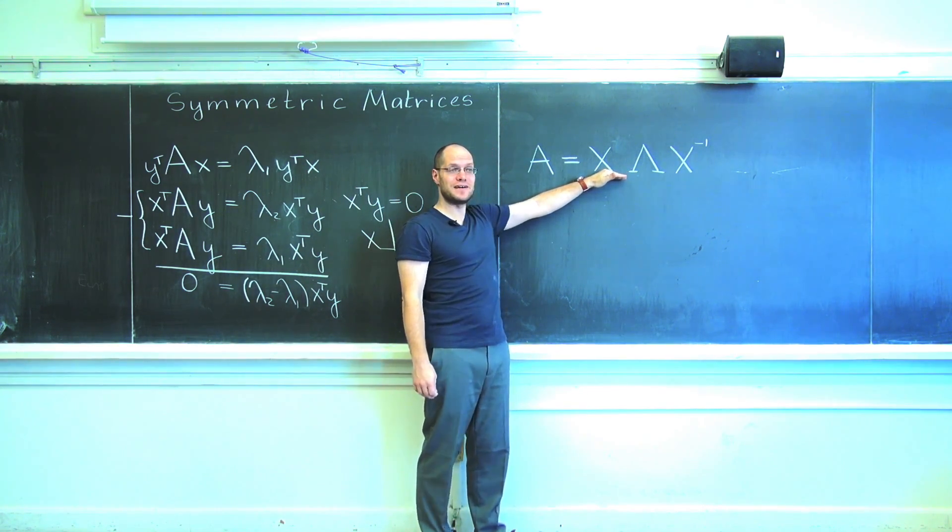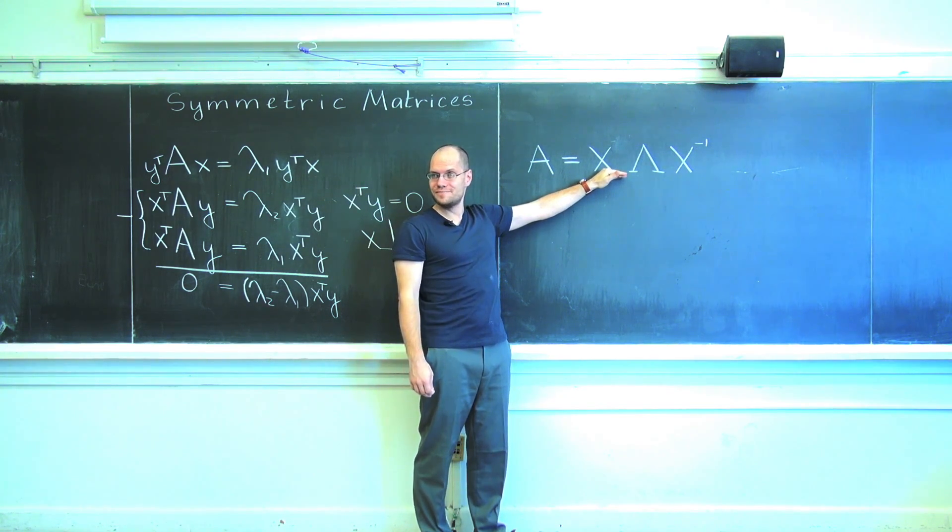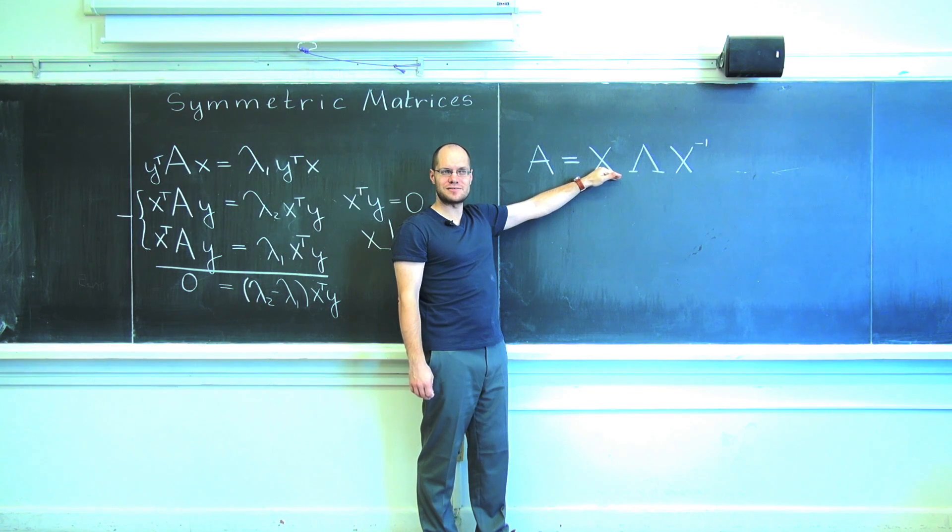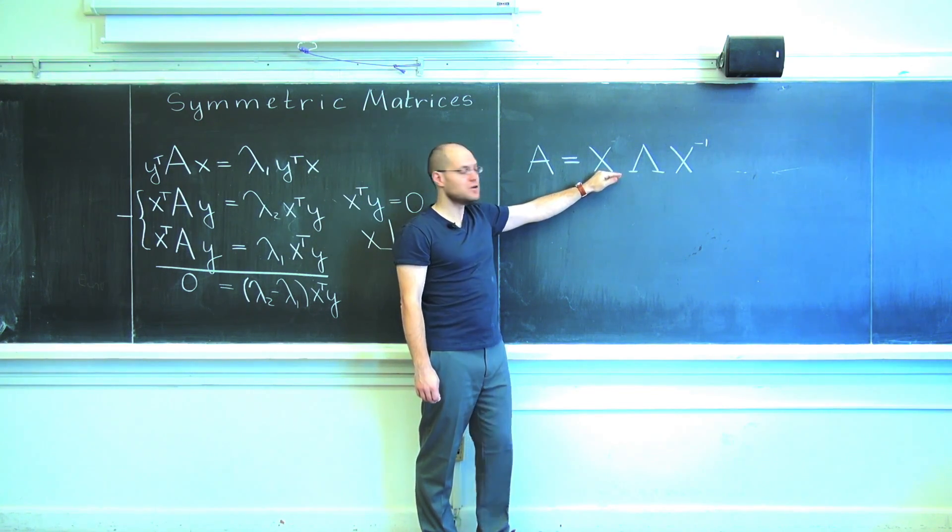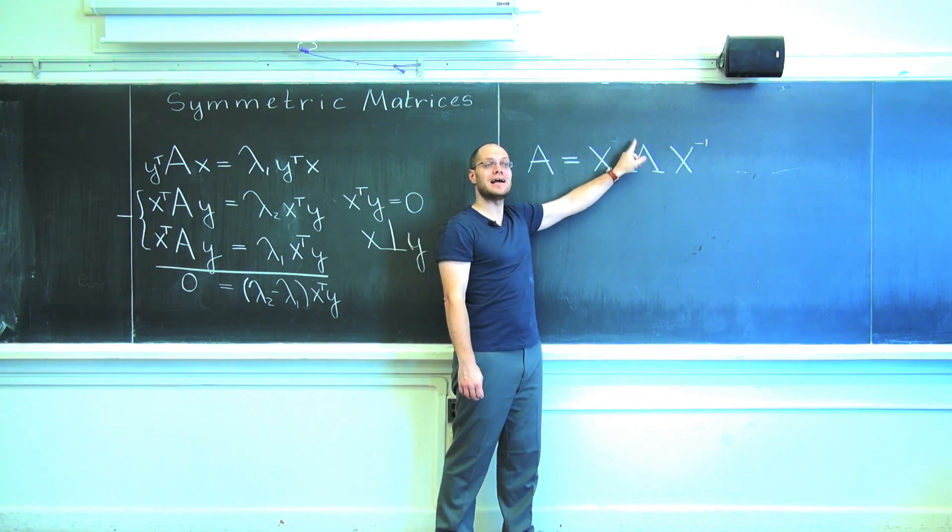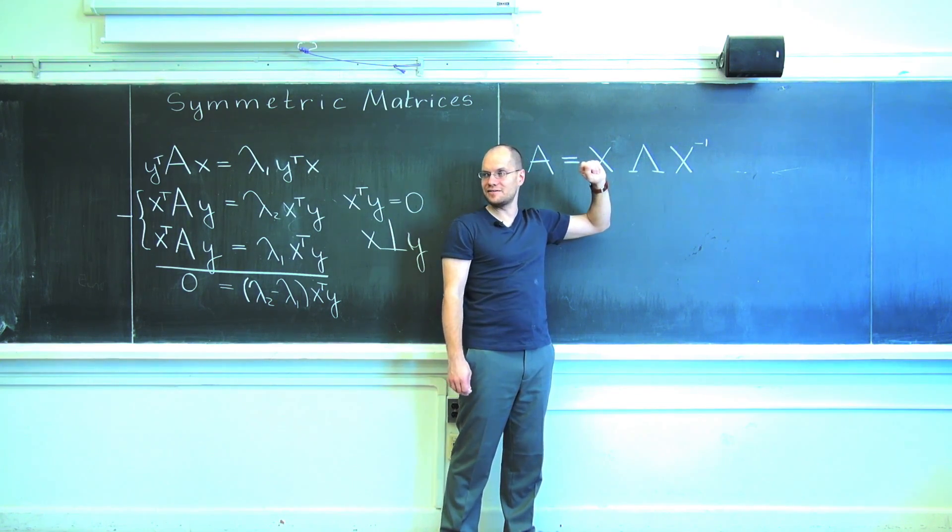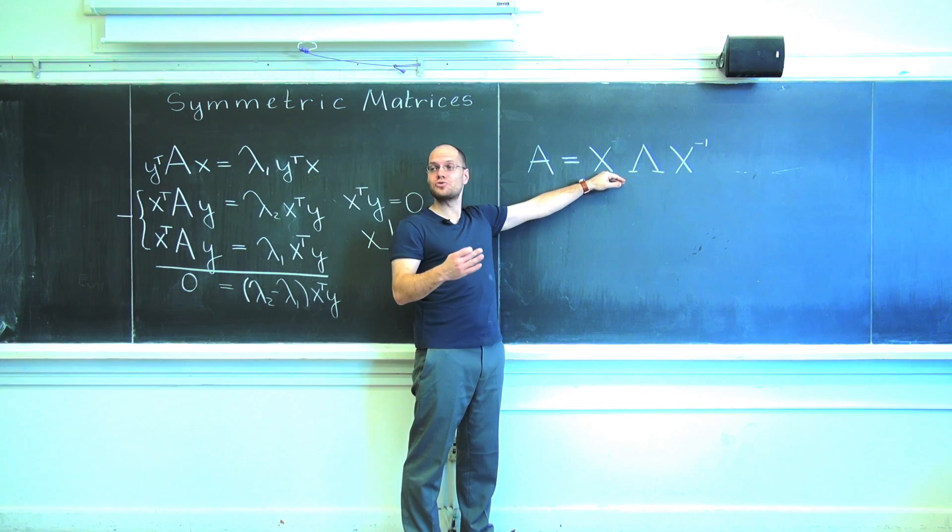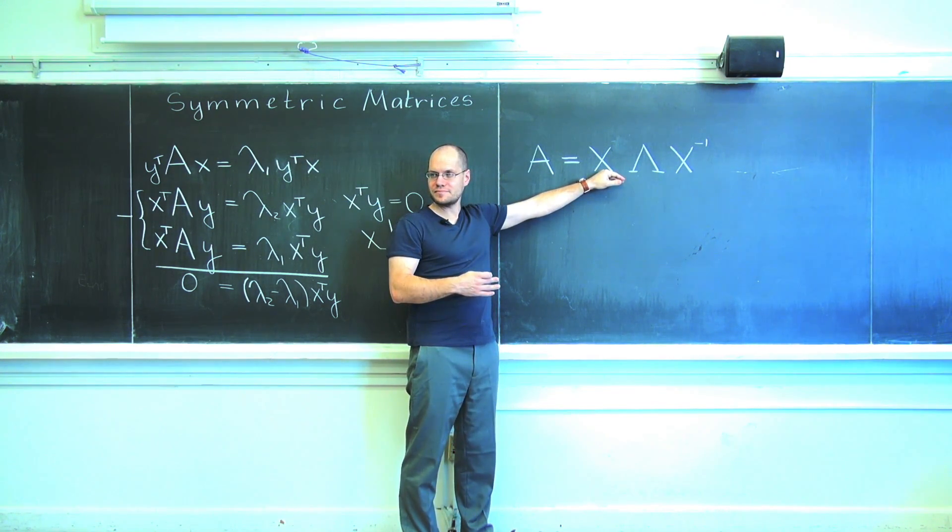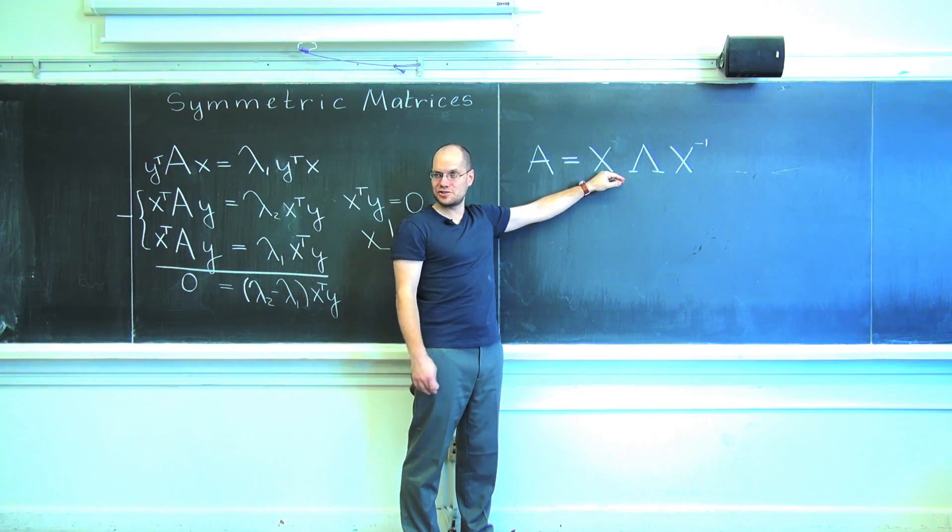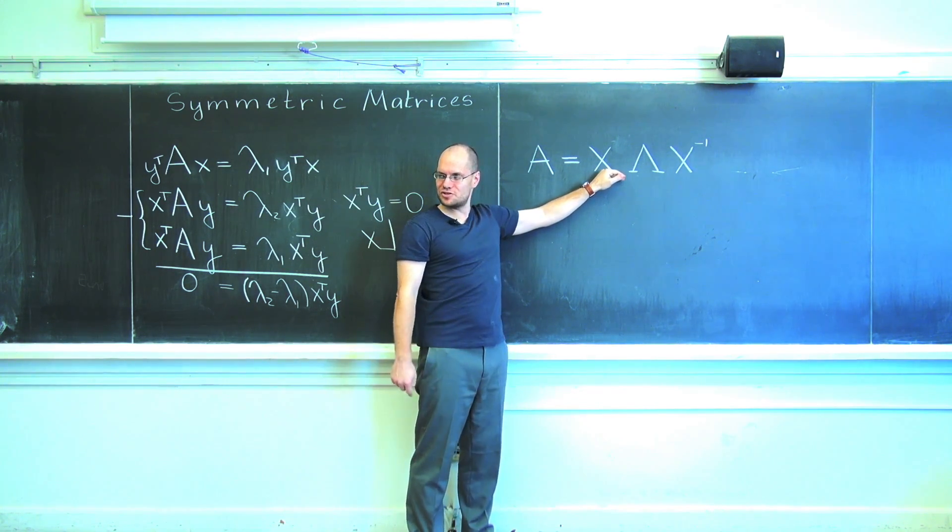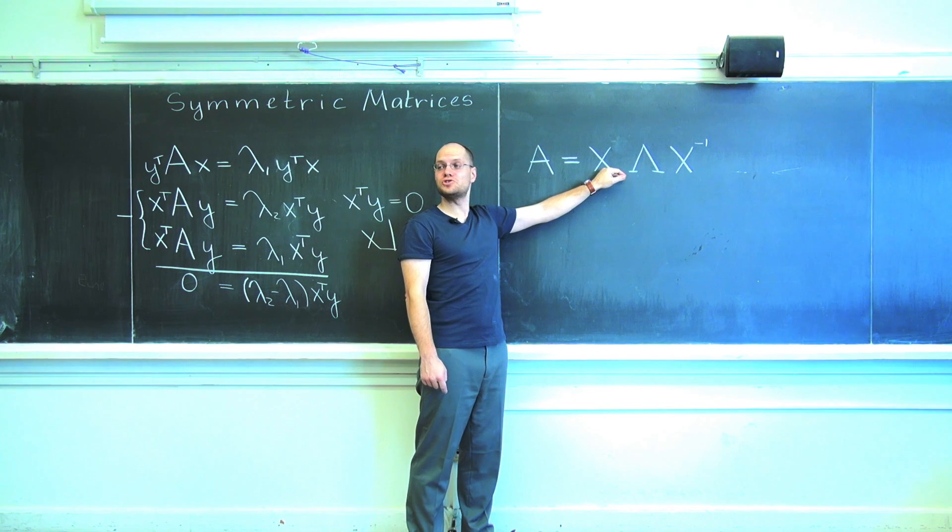Okay, now the columns of X are either orthogonal. Let's remind ourselves what goes into X? The eigenvectors of A. What goes into lambda? The eigenvalues of A on the diagonal. From what we just learned, the columns of X are already orthogonal if all of the eigenvalues are distinct. But if they're not, we can choose them to be orthogonal. So let's choose those.